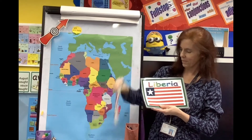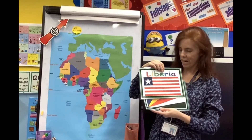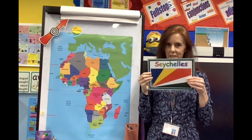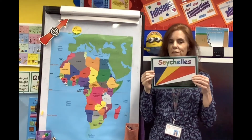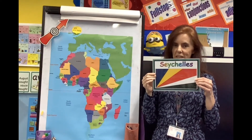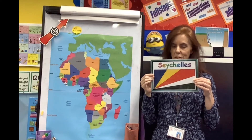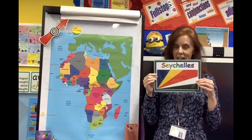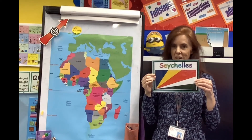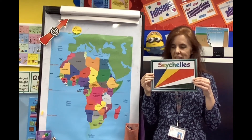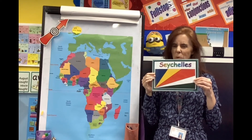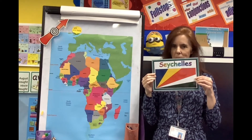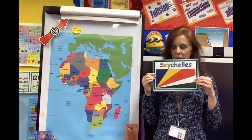Botswana is going to be last, Liberia - it's a bit like the American flag - and the Seychelles. Now there were 53 there if you counted, so one's missing. We're not sure which one - that could be a challenge. You could look at a list of the African countries and see if you can work out which one is missing. I think it might be something really small like São Tomé and Príncipe.